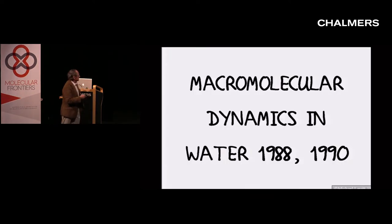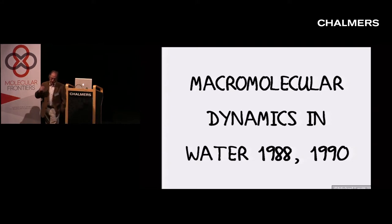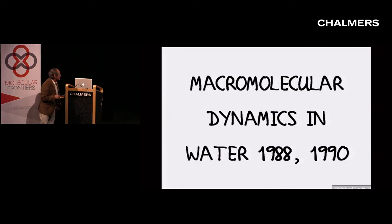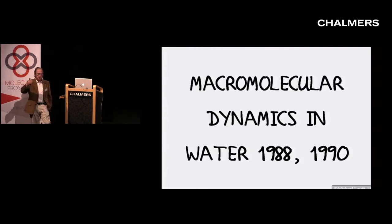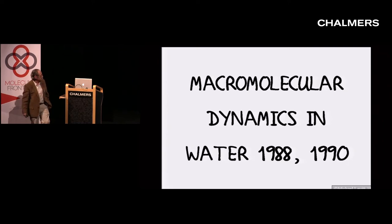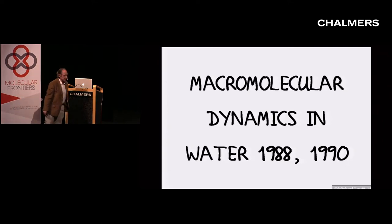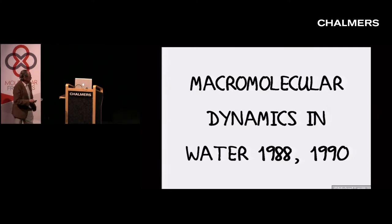The big problem was that those calculations didn't include water. Water had been pioneered by Raman, who first did argon, and then Raman and Stillinger did liquid water. Adding proteins into water was a big deal because you couldn't just use any energy functions — you had to use energy functions that fitted the water energy functions. Another problem was that calculations in water are about 100 times slower.